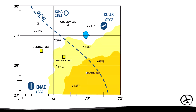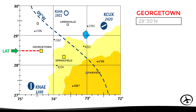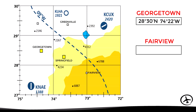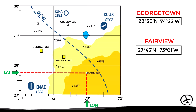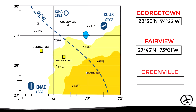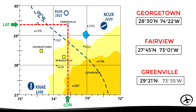In a more practical example, using a map with a grid of parallels and meridians, we determine the coordinates for the towns of Georgetown, Fairview, and Greenville. Georgetown is in the northern hemisphere, with a latitude of 28 degrees and 30 minutes north, and in the western hemisphere, with a longitude of 74 degrees and 22 minutes west. Fairview's coordinates are 27 degrees 45 minutes north and 73 degrees 1 minute west. Greenville's coordinates are 29 degrees 21 minutes north and 73 degrees 35 minutes west.